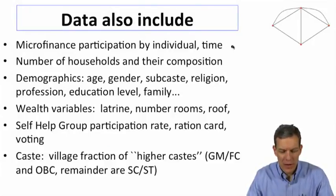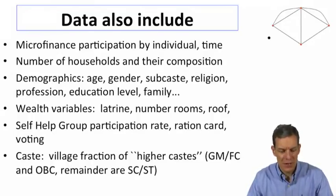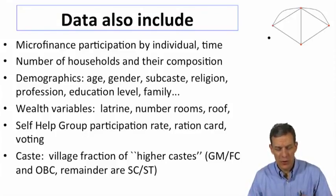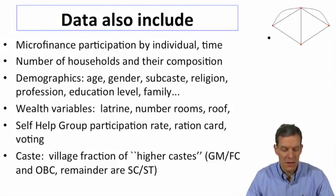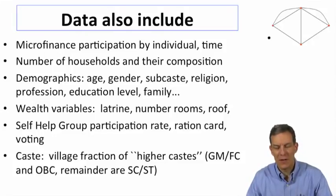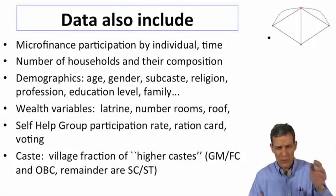We also have a lot of other information: demographics, microfinance participation over time, number of households and their composition, age, gender, subcaste, religion, profession, education levels, caste information, wealth variables, participation rates in self-help groups and ration cards, voting behavior, and a whole series of other things we can control for.